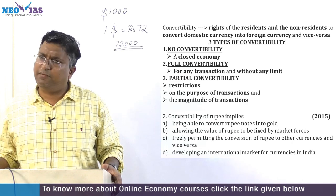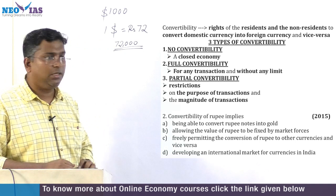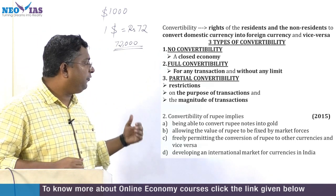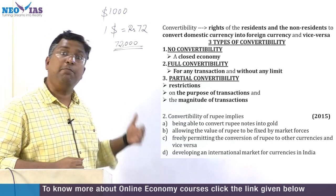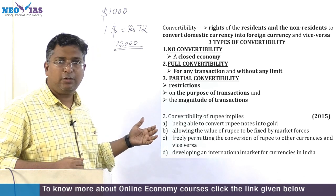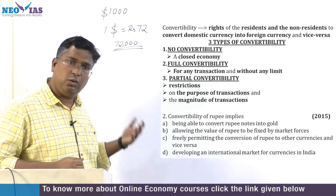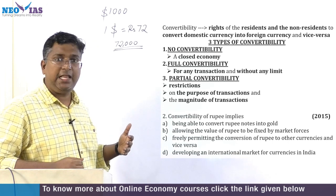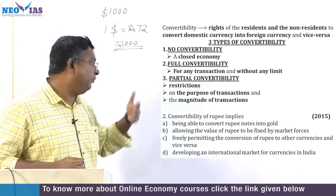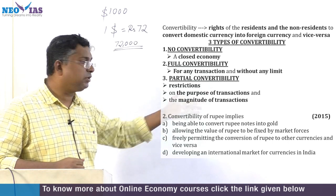In the 2015 UPSC exam, a simple question was asked: 'Convertibility of rupee implies what?' The options were: being able to convert rupee notes into gold; allowing the value of rupee to be fixed by market forces; or freely permitting the conversion of rupee to other currencies and vice versa. The answer is option C — freely permitting the conversion of rupee to other currencies and vice versa.